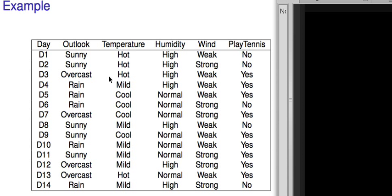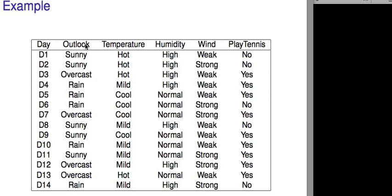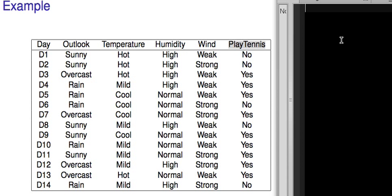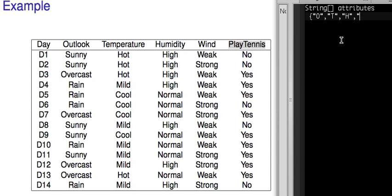For example, in the play tennis example, we have five attributes. In a program, you might have a string attributes array where the attributes are: outlook, temperature, humidity, wind, and play tennis.